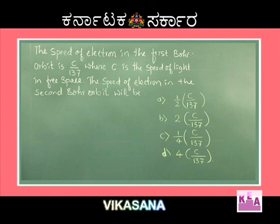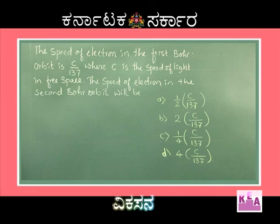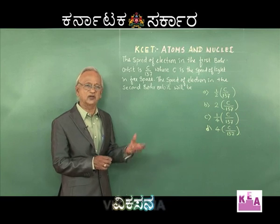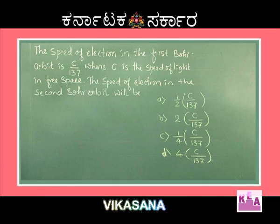We will take up one more problem in that direction. The problem is: the speed of electron in the first Bohr orbit is given as c over 137, where c is the speed of light in free space. The speed of electron in the second Bohr orbit will be what?